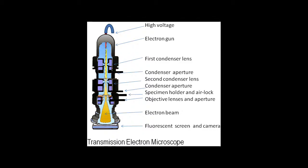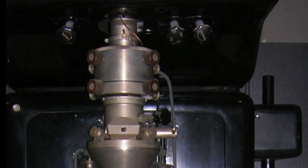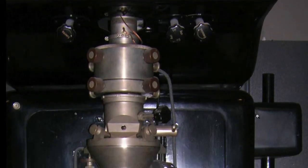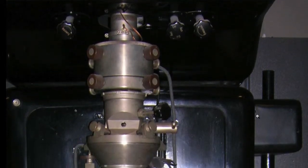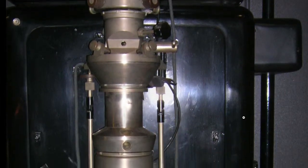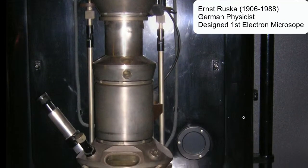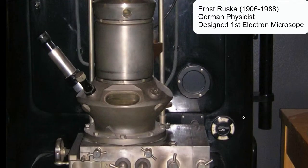An electron microscope is a type of microscope that uses an electron beam to illuminate a specimen and produce a magnified image. Here is a picture of one of the earliest electron microscopes, created by German physicist Ernst Ruska back in the early 1930s.